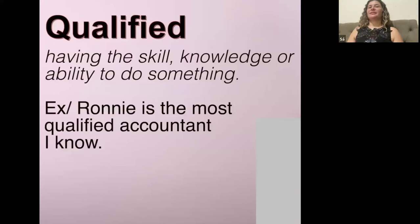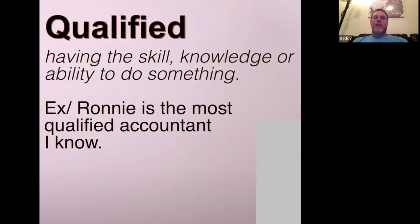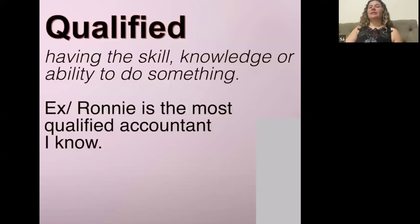The next word is 'qualified.' Qualified is something you usually have to take a class for, study for, or learn about before you can actually do a skill. You've got to get qualified — for example, to do electrical work in your house. This is when someone has the skill, knowledge, or ability to do something specific. Example: 'Ronnie is the most qualified accountant I know.'